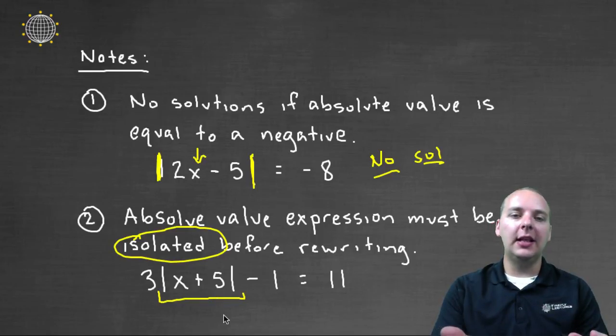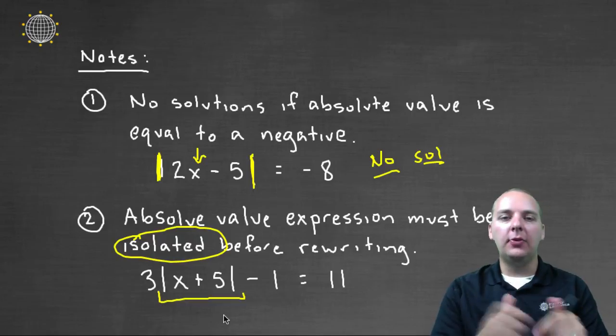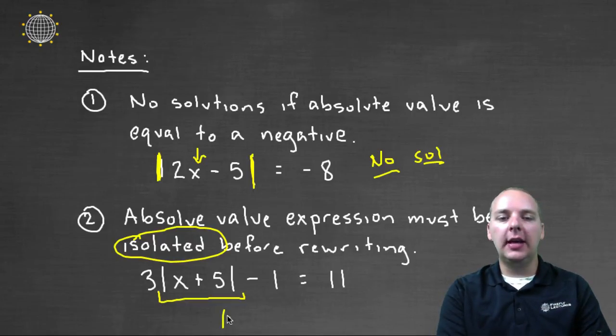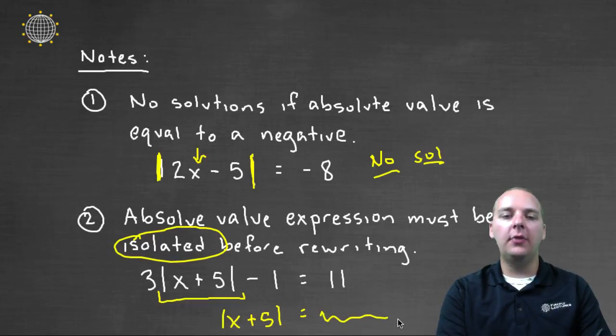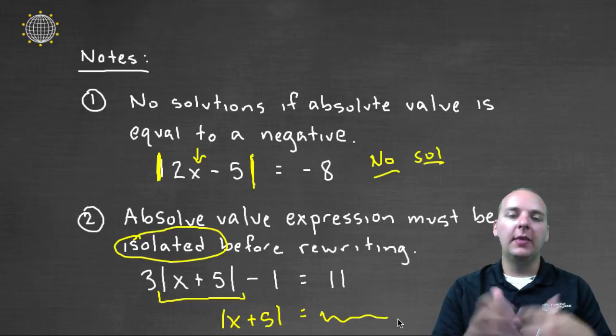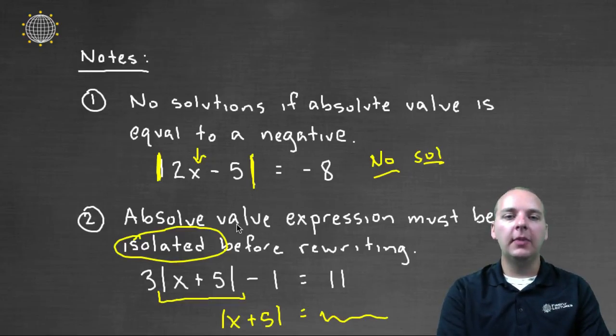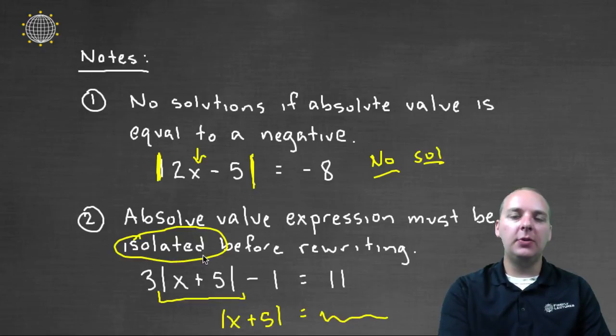You would have to do things like add one to the right and divide by three, do whatever you need to do to get the absolute value of x plus 5 all by itself on the left hand side. Then, whatever that number is on the right hand side, you could set it equal to whatever you need to set it equal to. But don't do anything until that absolute value expression is isolated all by itself. So you might have a little bit of work to do on the front end. That's how we solve equations that have absolute values in them.